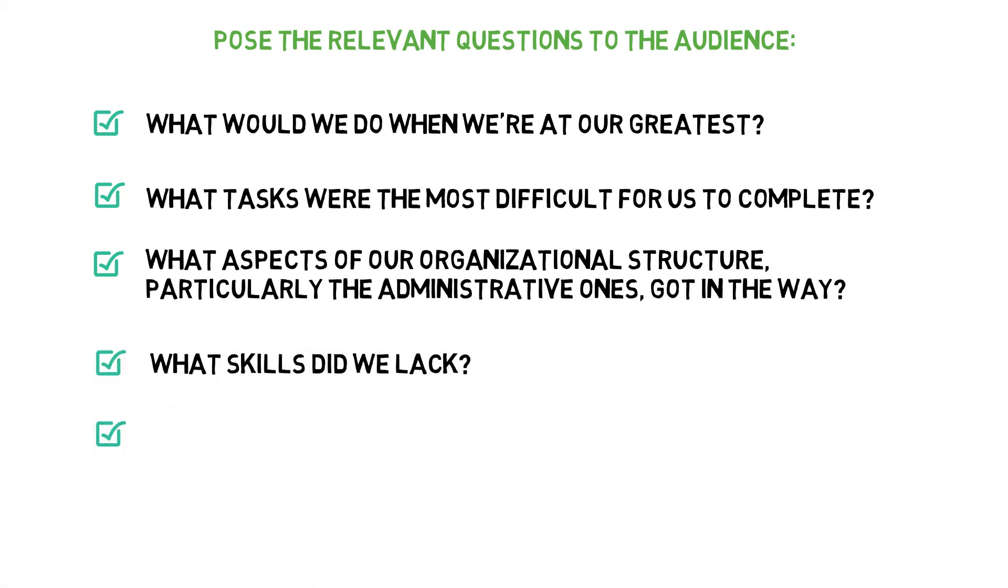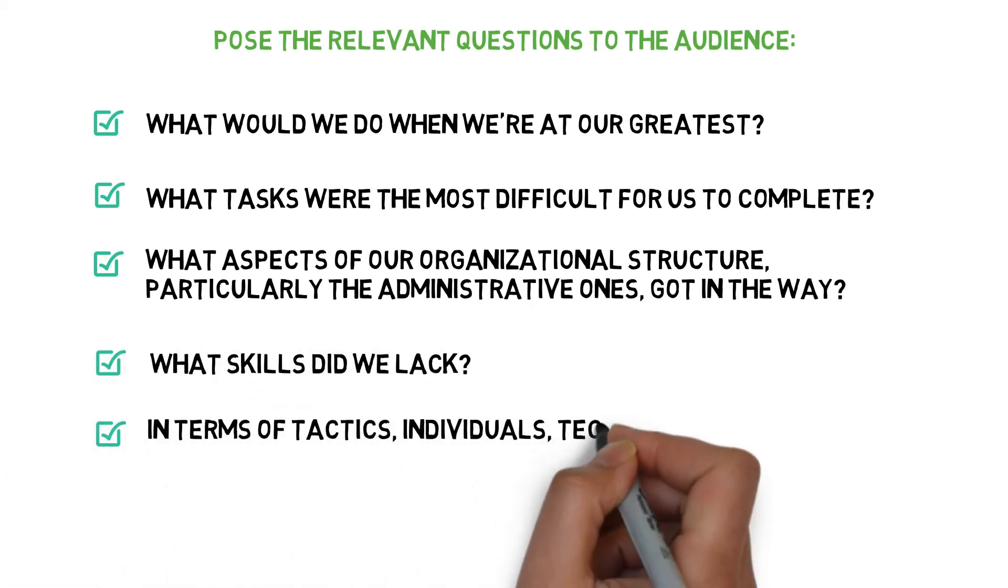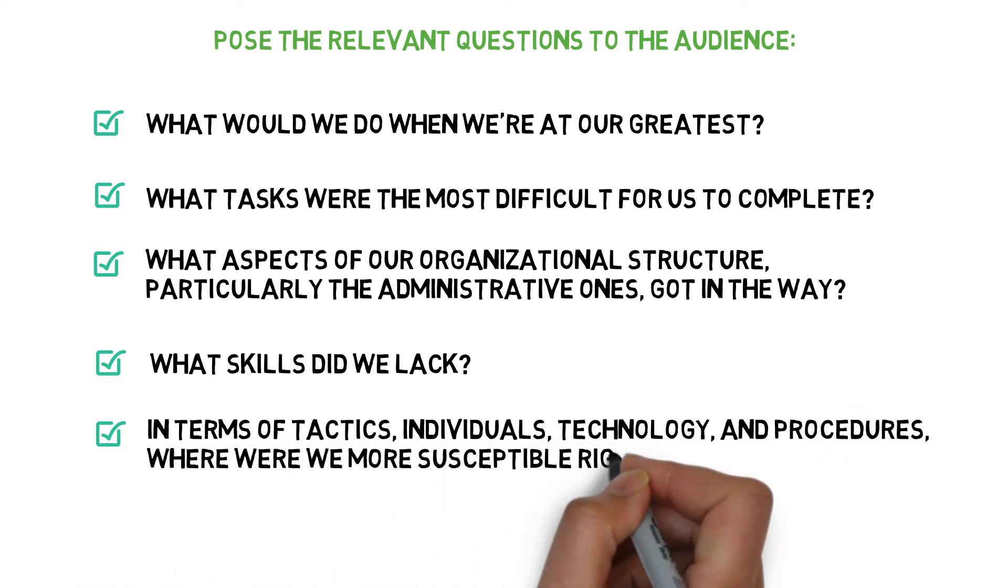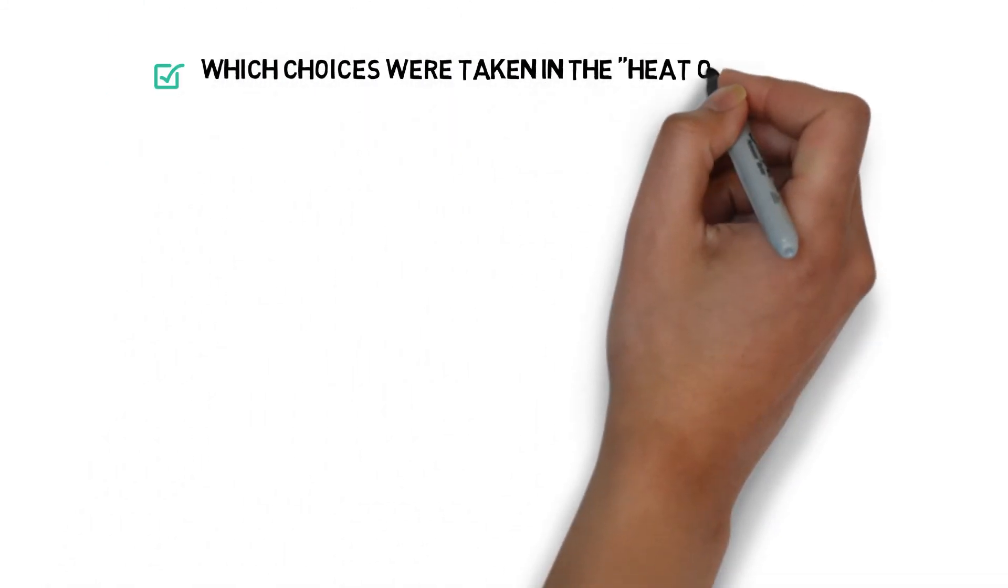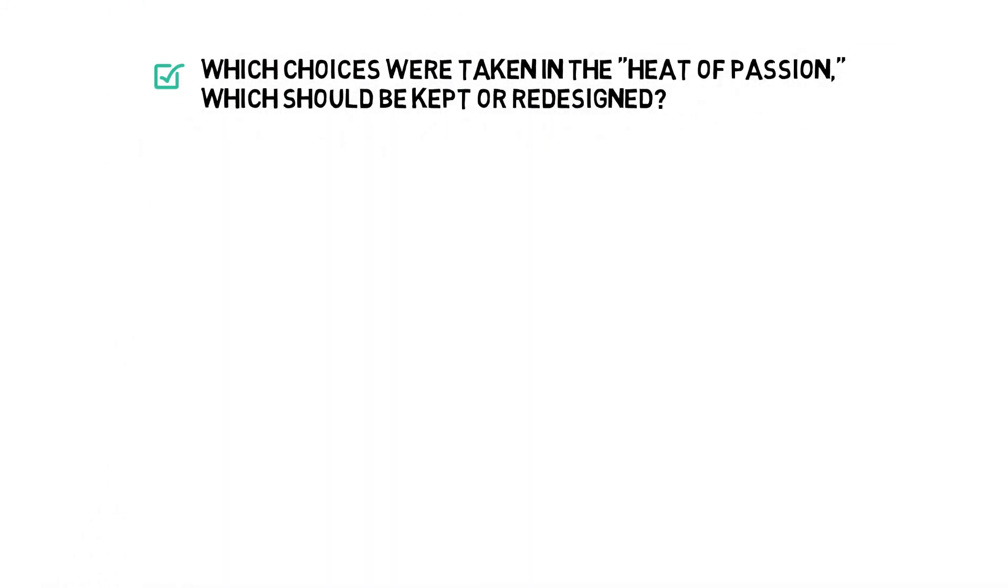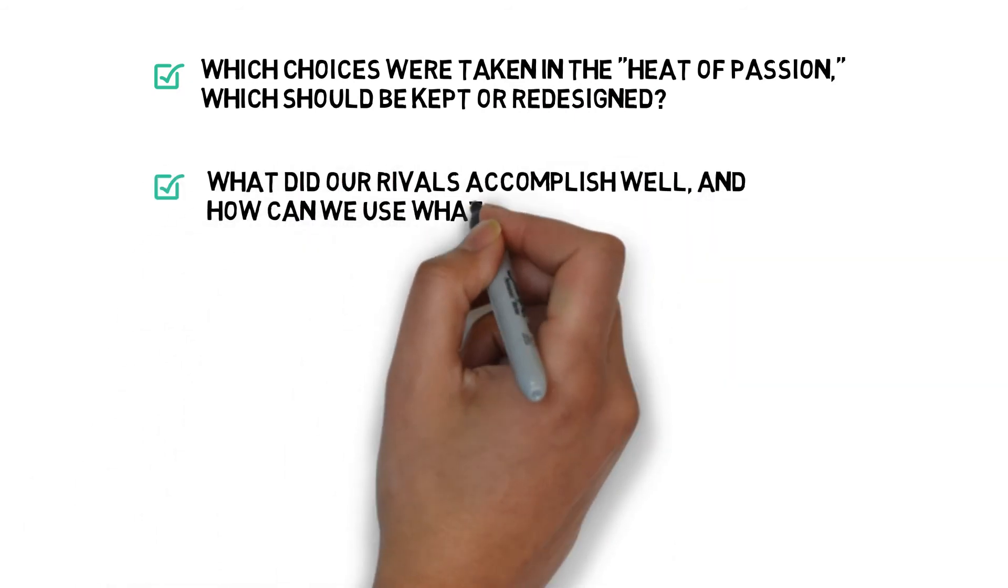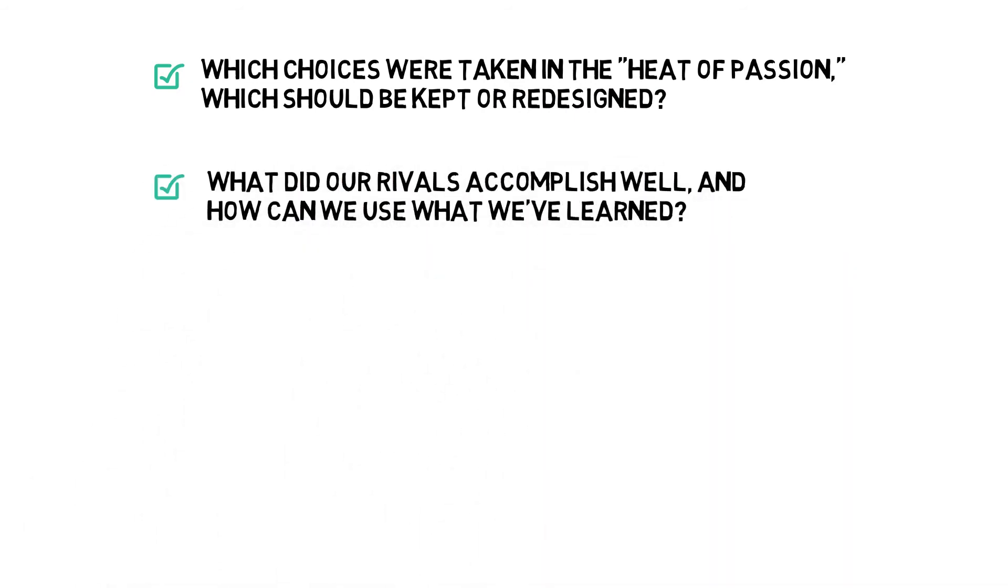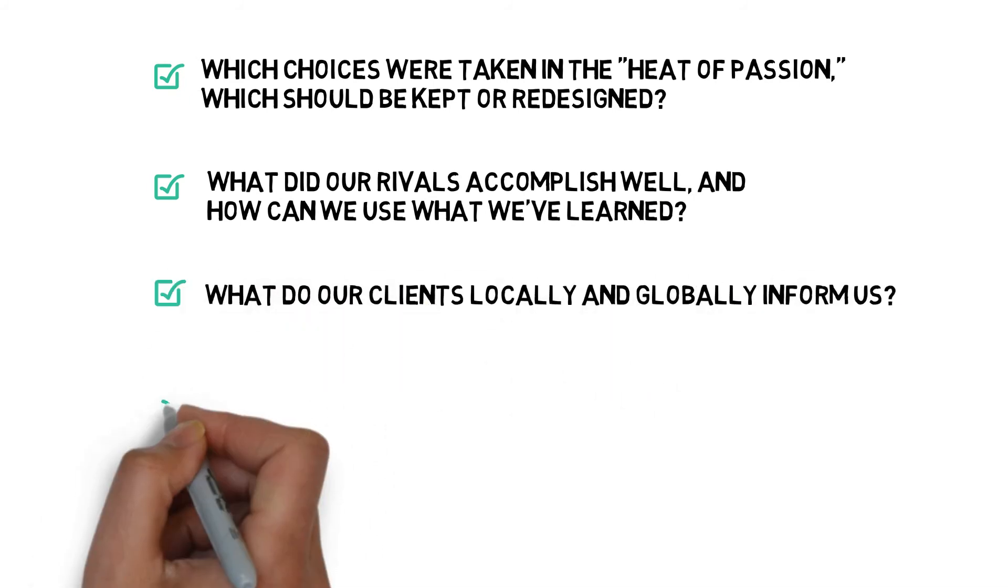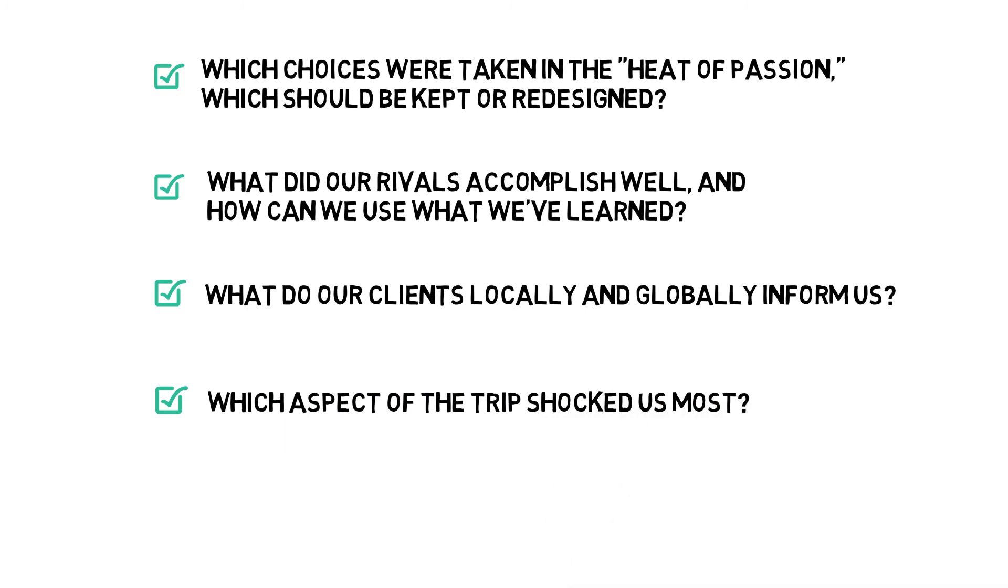What skills did we lack? In terms of tactics, individuals, technology, and procedures, where were we more susceptible right now? Which choices were taken in the heat of passion, which should have been kept or redesigned? What did our rivals accomplish well, and how can we use what we've learned? What do our clients locally and globally inform us? Which aspect of the trip shocked us most?